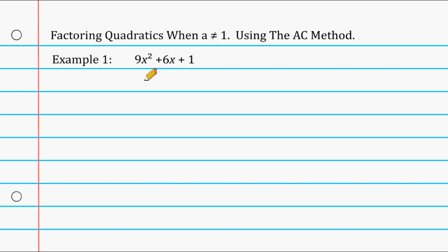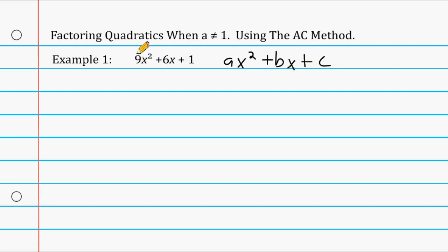We're going to use something called the AC method. The standard form of a quadratic equation is ax squared plus bx plus c. So this 9 right here is our a term, this 6 right here is our b term, and this constant of 1 is our c term. To use the AC method, we start with our a term and our c term and multiply them together.